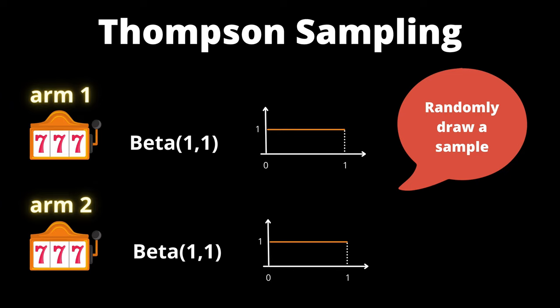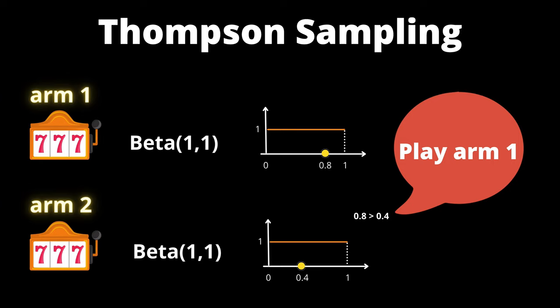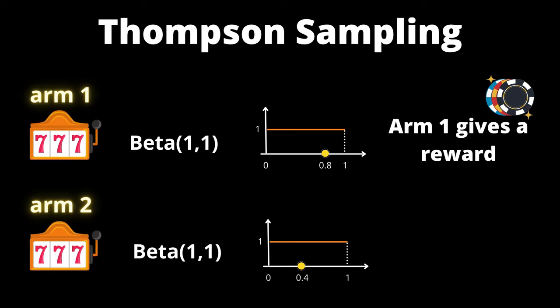For example, we draw 0.8 for arm 1 and 0.4 for arm 2. Because 0.8 is greater than 0.4, we play arm 1. With the unknown true probability of 0.6, arm 1 will give us a reward. Let's assume that arm 1 indeed gives us a reward. Then the posterior distribution of arm 1 updates to beta 2 1.